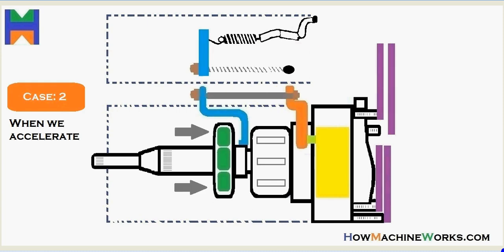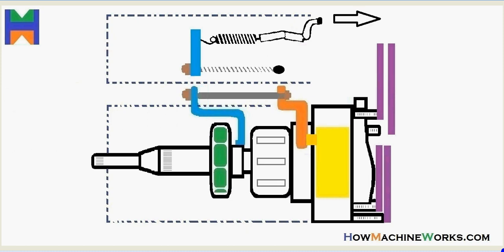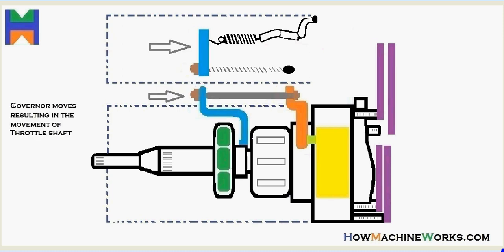Case 2 is when we accelerate the vehicle. When we use the accelerator pedal to accelerate the vehicle, the accelerator cable pushes the throttle shaft over there. So the throttle shaft moves, which results in the movement of the spring which is connected to the governor arm. So the blue governor arm moves.